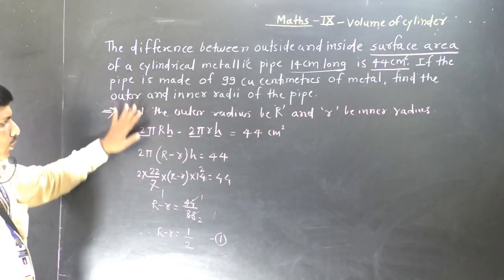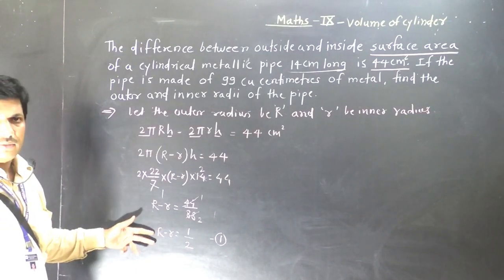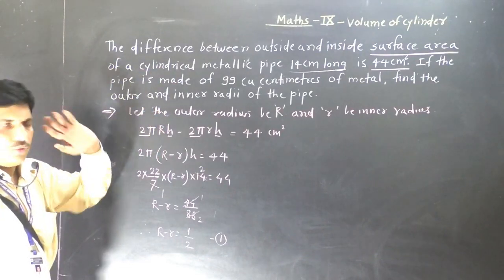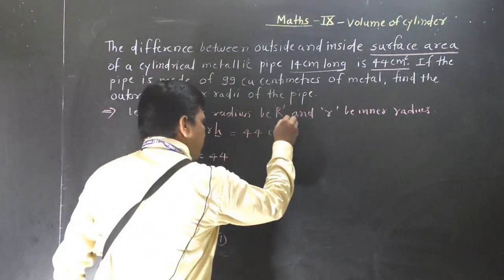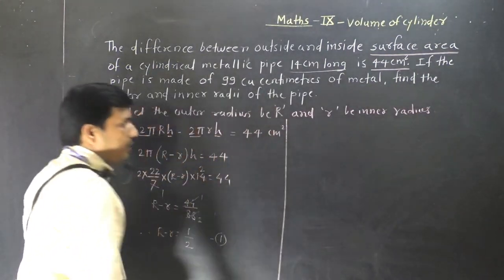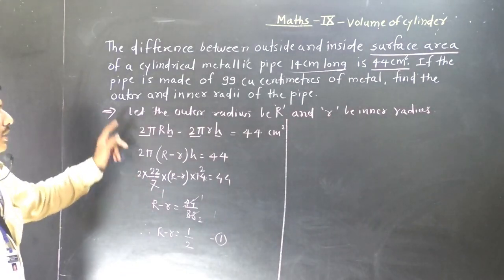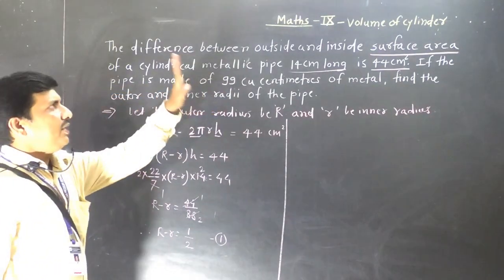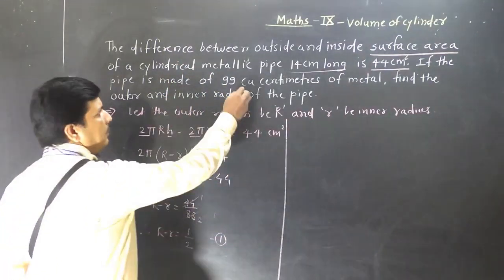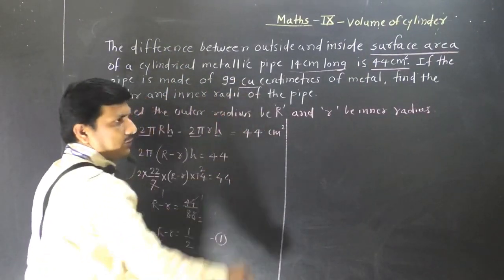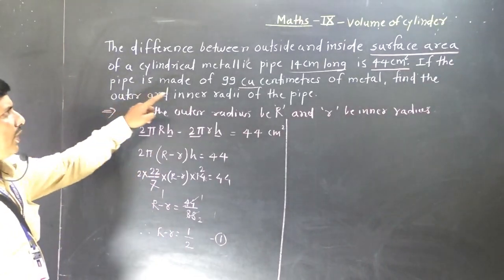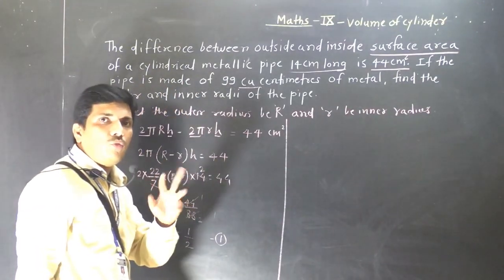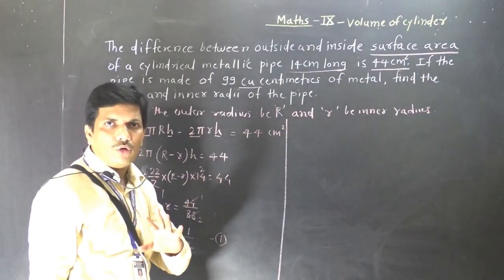With the help of the given information we got the thickness. Capital R minus small r is the thickness of the hollow shape. Now one more condition is given which we will use. The pipe is made of 99 cubic centimeters. Cubic centimeters means this is volume, so we need to find the difference between the outer volume and the inner volume.